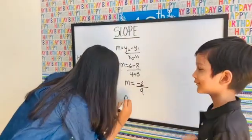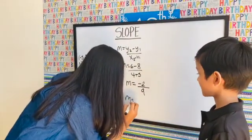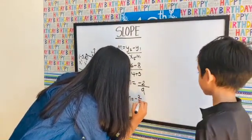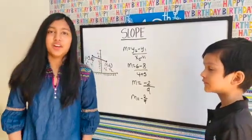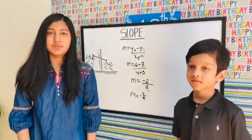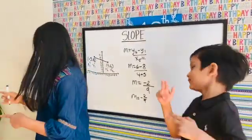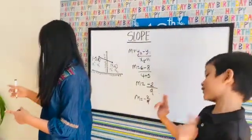So we know the slope is m equals negative 2 over 9. This is the end of the video and we'll see you in the next episode.